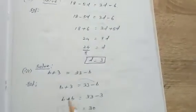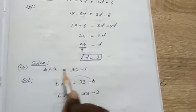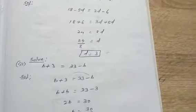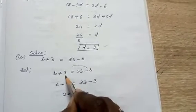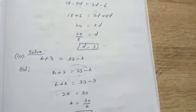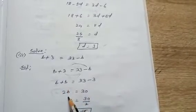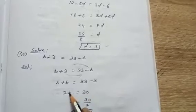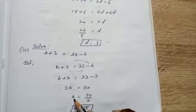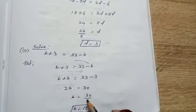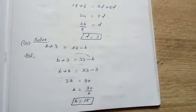The next example: Solve b + 3 = 33 - b. Taking variables on one side: -b transposed becomes +b on the left. Taking constants on one side: +3 transposed becomes -3 on the right. So b + b = 2b, and 33 - 3 = 30. We need to find b: 2b = 30, so dividing by 2 gives b = 15. Therefore, the solution is b = 15.